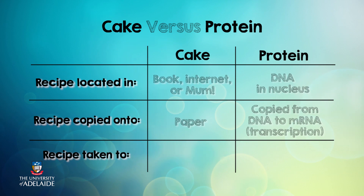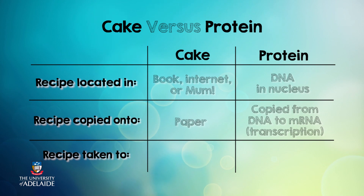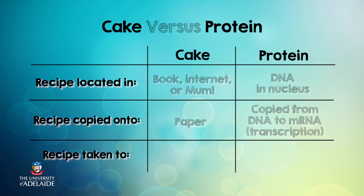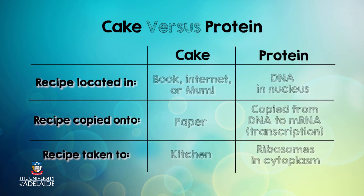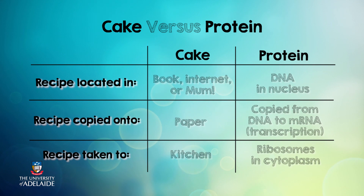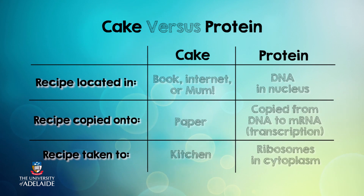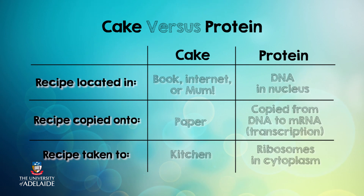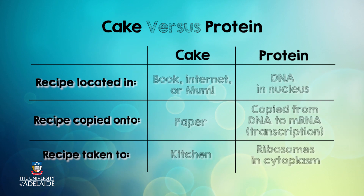To make a cake, I leave my mum's house, recipe in hand, and travel home to my own kitchen. To make a protein, the messenger RNA molecule similarly leaves the nucleus via nuclear pores and travels to ribosomes in the cytoplasm.